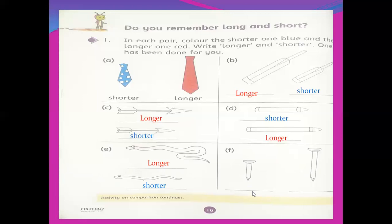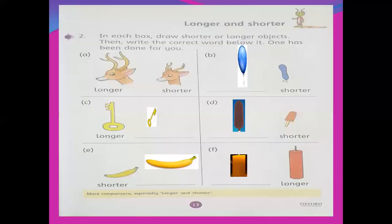This one is the longer — write 'longer'. This is shorter — color it blue. This is the longer — color it red. So in this page you will do two things: first you write 'shorter' and 'longer', and second you will color. Next: page number 17.